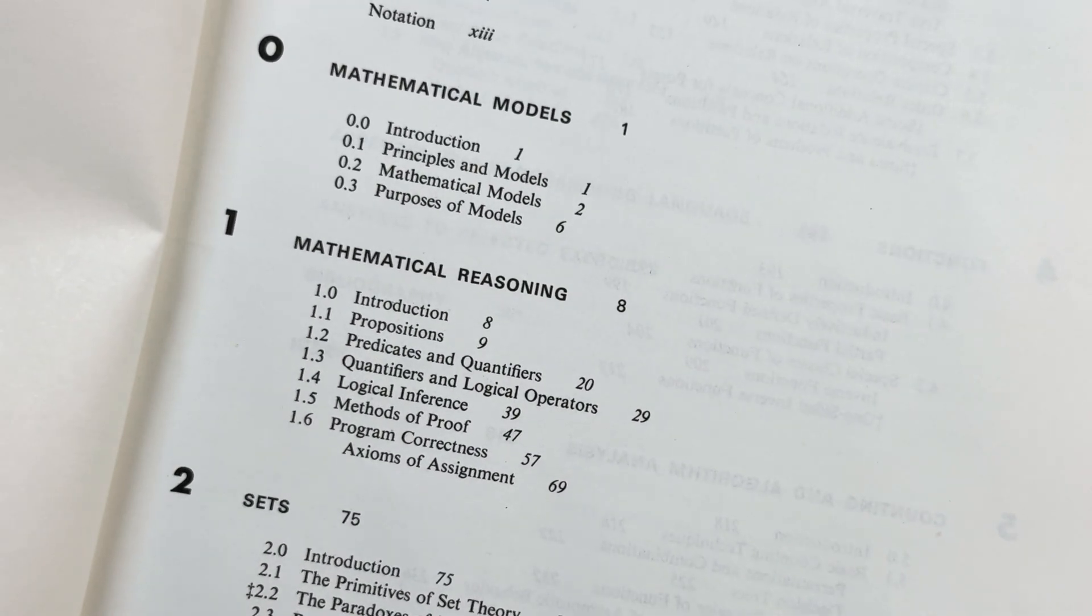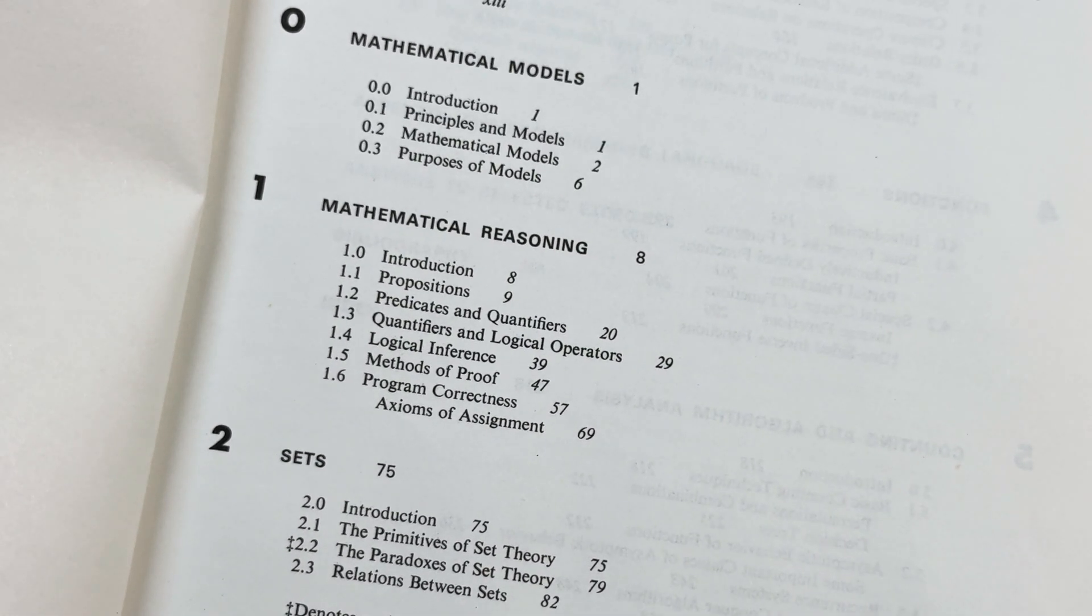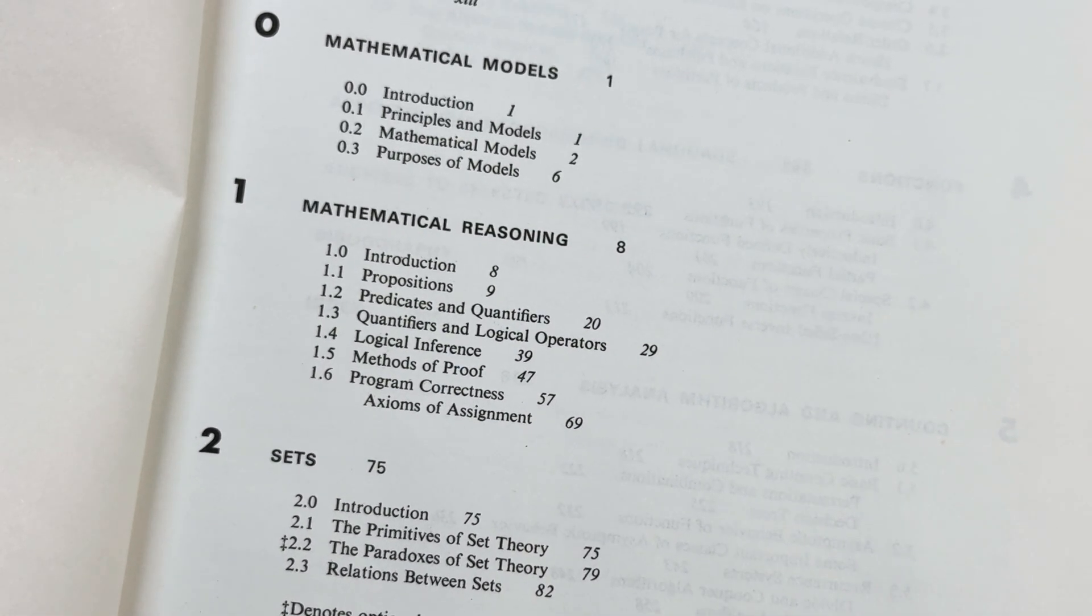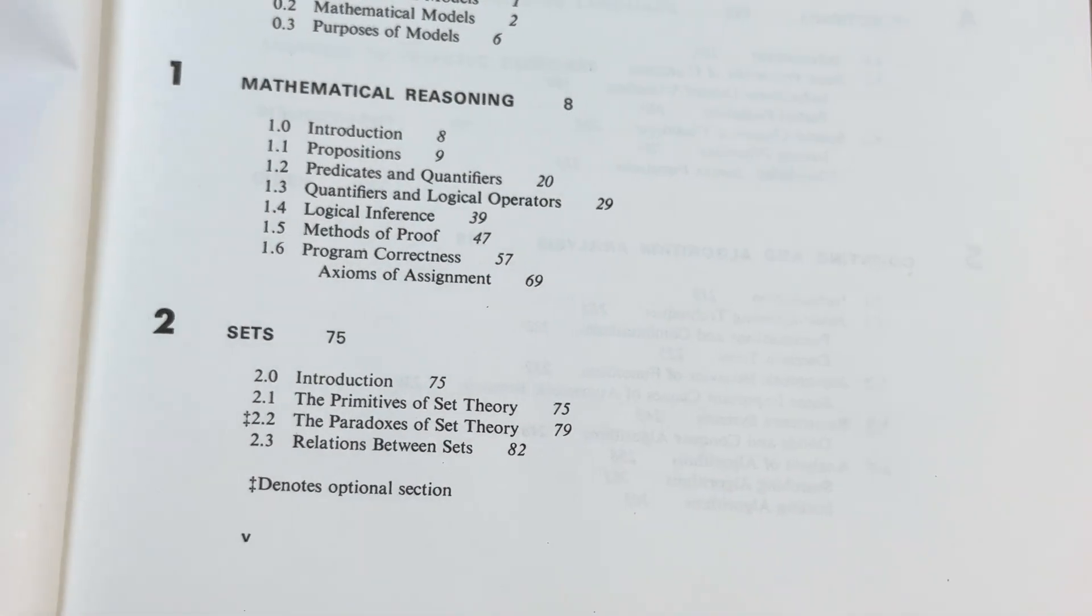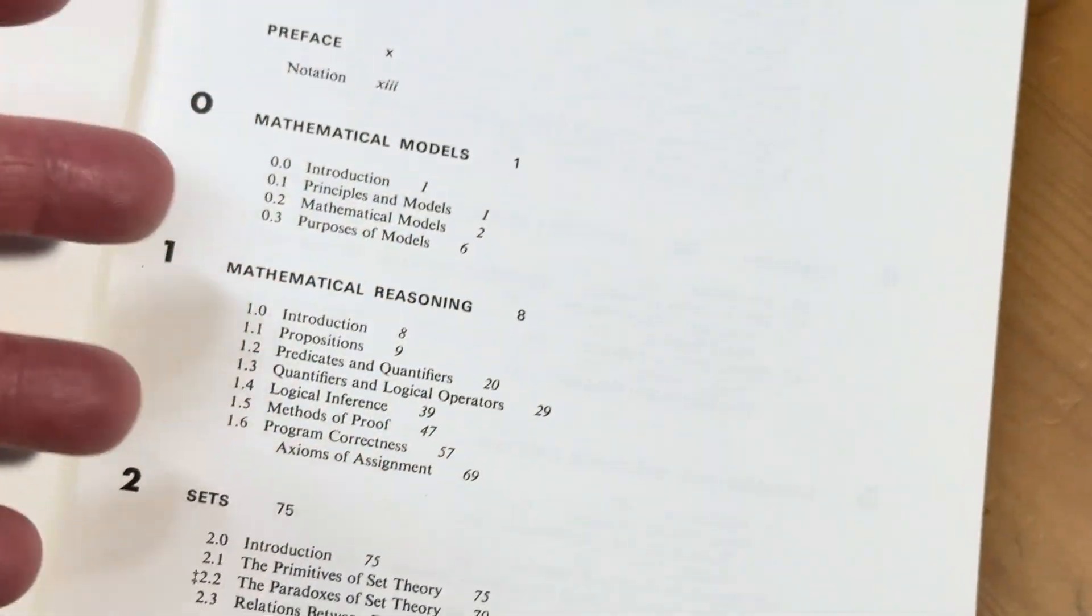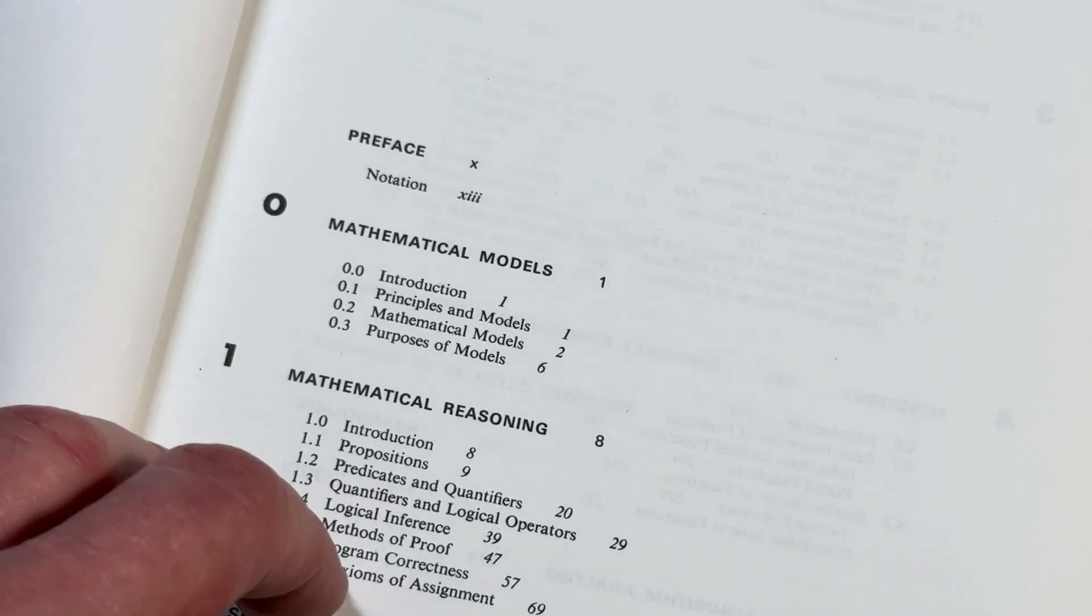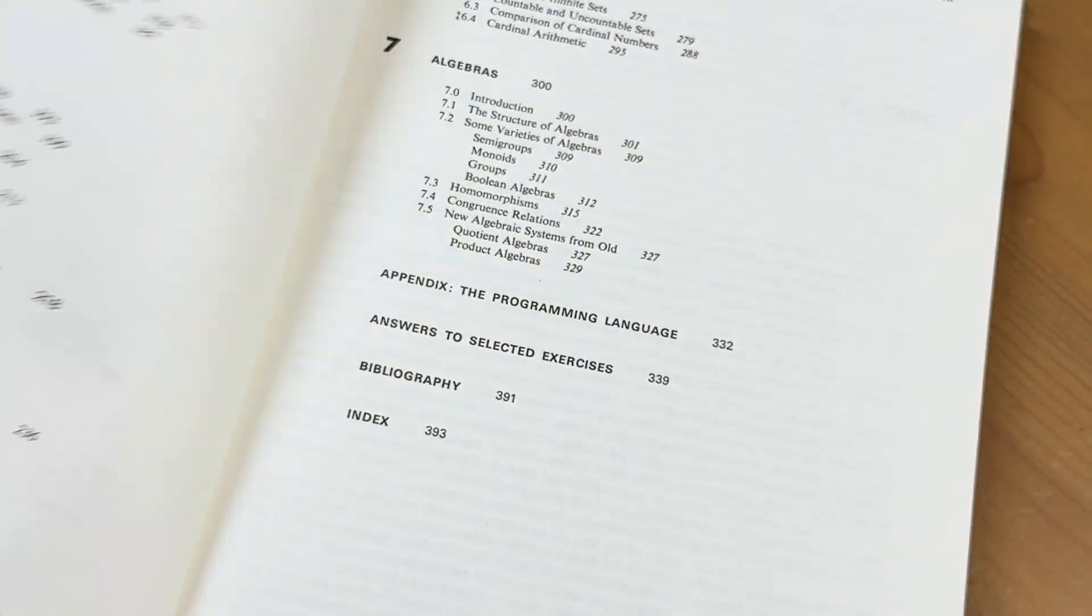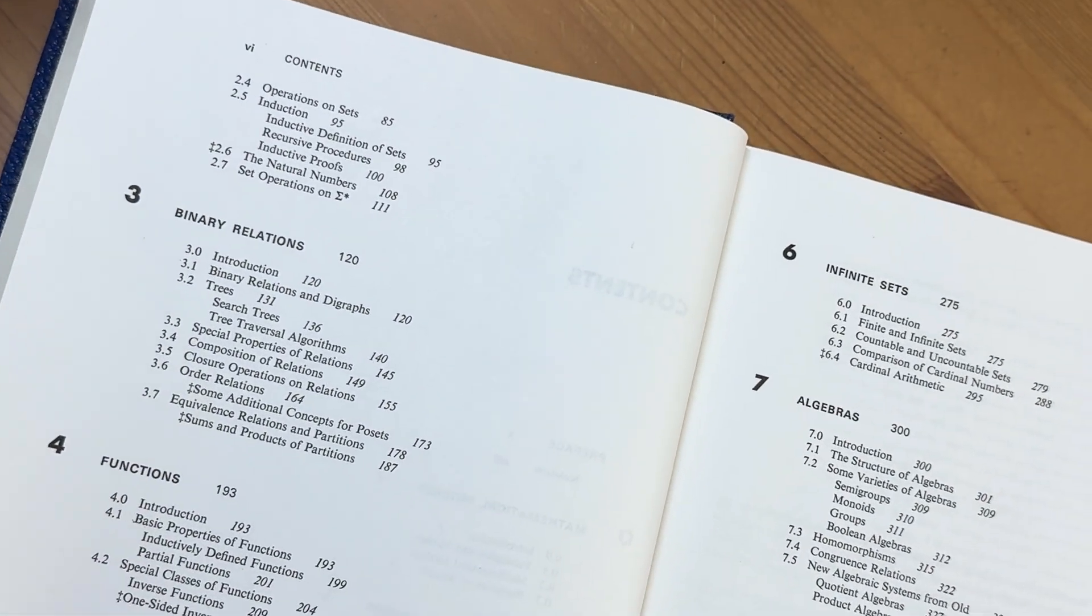Mathematical Models. Mathematical Reasoning. So this is like proof-writing type stuff here. Sets. Most discrete math courses in college today start with these same topics. So you could, in theory, use this as a supplement if you were taking discrete math.